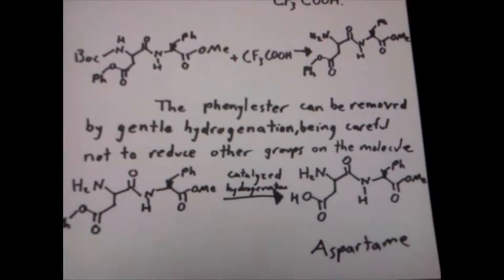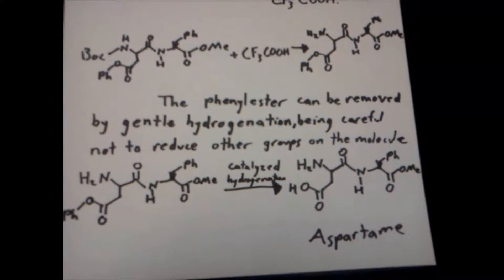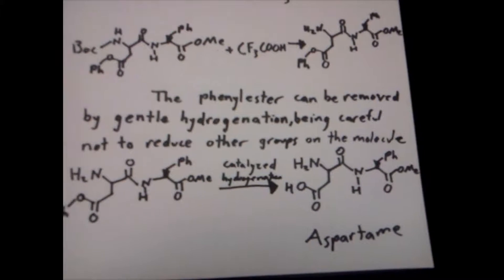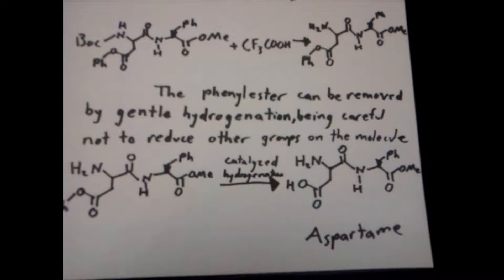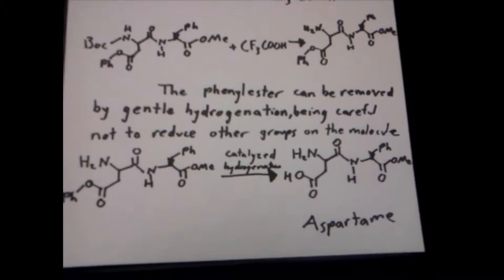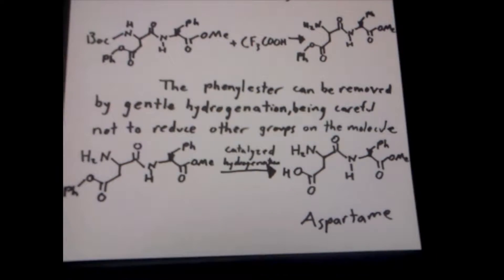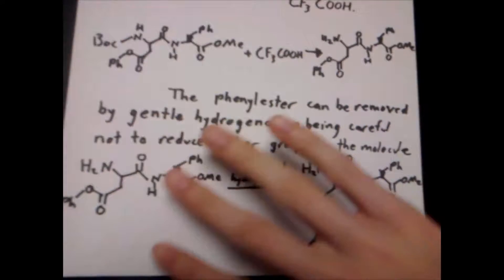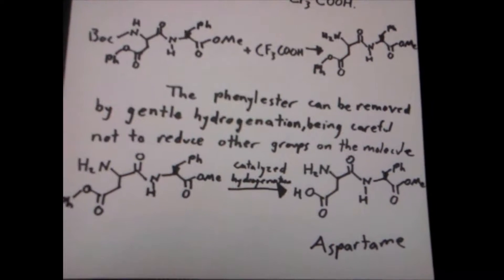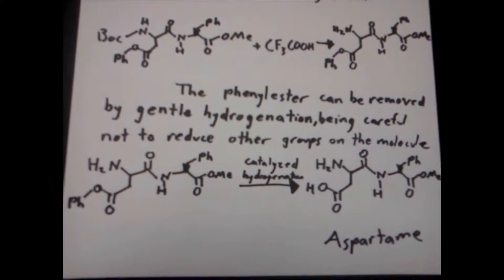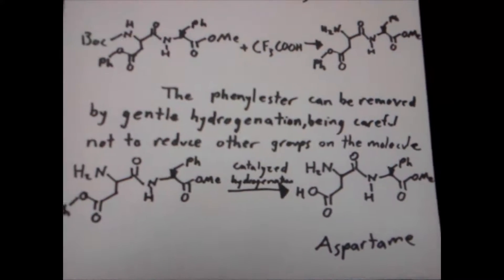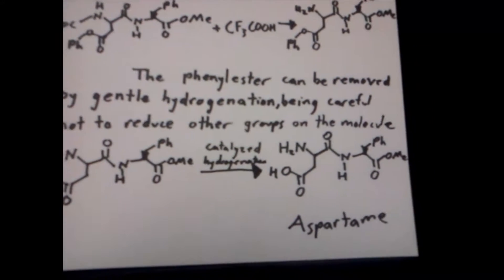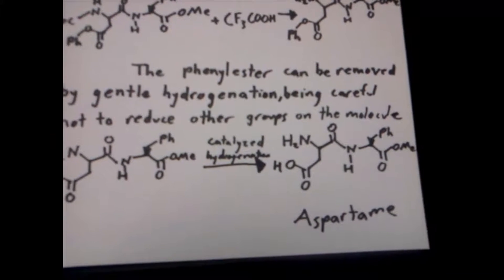The phenyl ester can be removed by gentle hydrogenation — that is the phenyl group at the bottom — being careful not to reduce other groups on the molecule. We use catalytic hydrogenation under gentle conditions so that we don't reduce the carbonyls elsewhere in the compound and turn them into alcohol groups. With patience and gentle conditions, we can convert our dual-protected aspartame into regular aspartame.